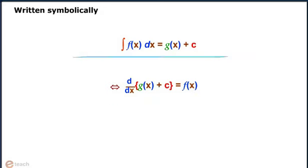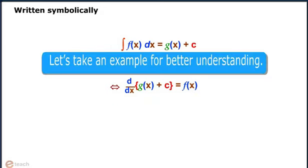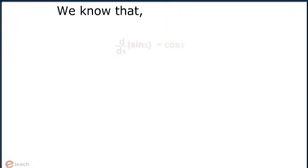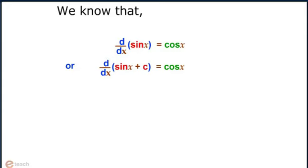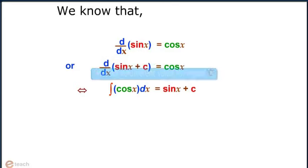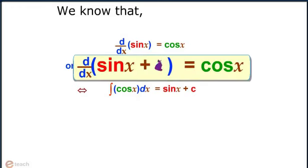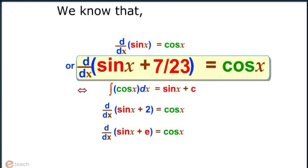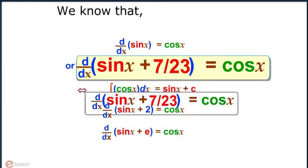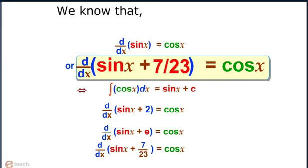Let's take an example for better understanding. We know that d/dx of sin x equals cos x, or d/dx of [sin x + c] equals cos x. That is, integration of cos x dx equals sin x. Now let's take different values of c, such as c equals 2, c equals e, or 7/23. We see that for all values of c, d/dx of [sin x + c] is equal to cos x.